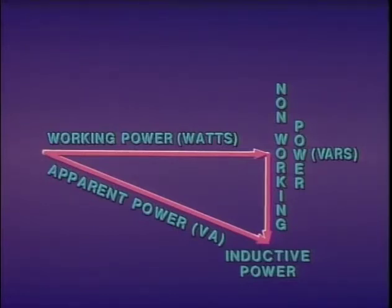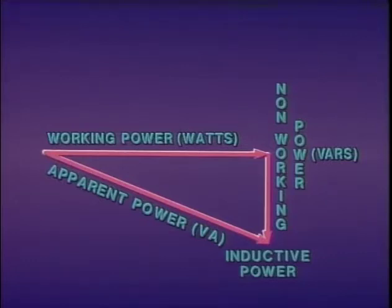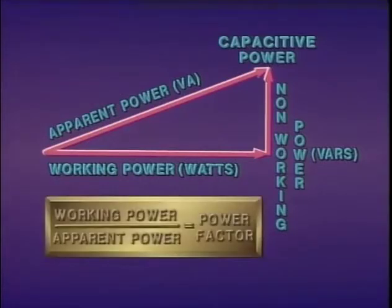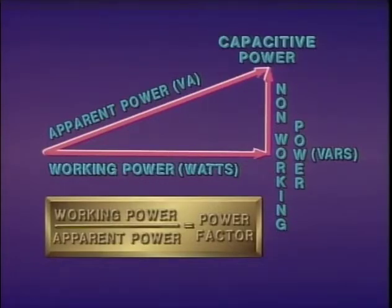Apparent power is measured in volt amperes and is represented by a diagonal line in the illustration. When a T&D system has more inductive power than capacitive power, the result is apparent power on the inductive side of working power. If a T&D system has more capacitive power than inductive power, the result is apparent power on the capacitive side of working power. The ratio of working power to apparent power is commonly referred to as the power factor. Capacitor banks and shunt reactors are used to improve the power factor — to improve the ratio of working power to apparent power.